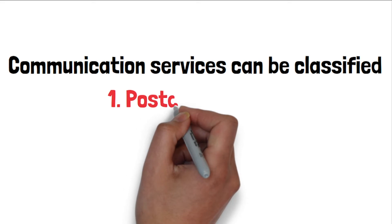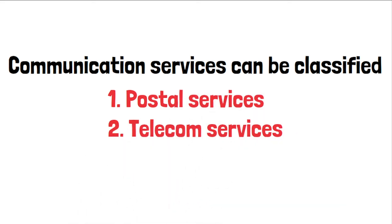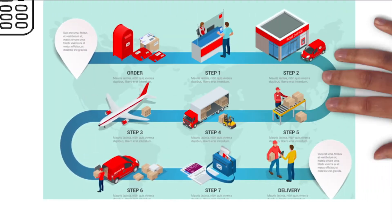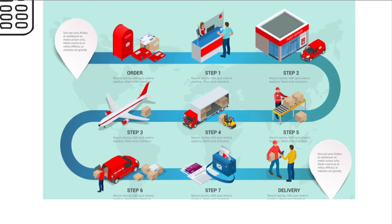Communication services are classified into two groups: the first is postal services, and the second is telecom services. Postal services is a system used to send mail and parcels from one place to another. In India we have Indian Postal Services, which is the biggest postal service department in India and quite large compared to other countries, with major divisions and circles across the nation.